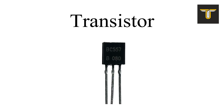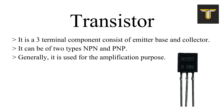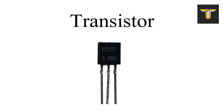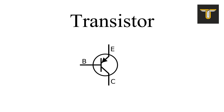Transistor is another electronic component that is widely used in circuits. It is a three-terminal component consisting of emitter, base, and collector. It can be of two types: NPN and PNP. Generally, it is used for amplification purposes, but it has a variety of applications in different circuits. The symbol for the transistor is this.